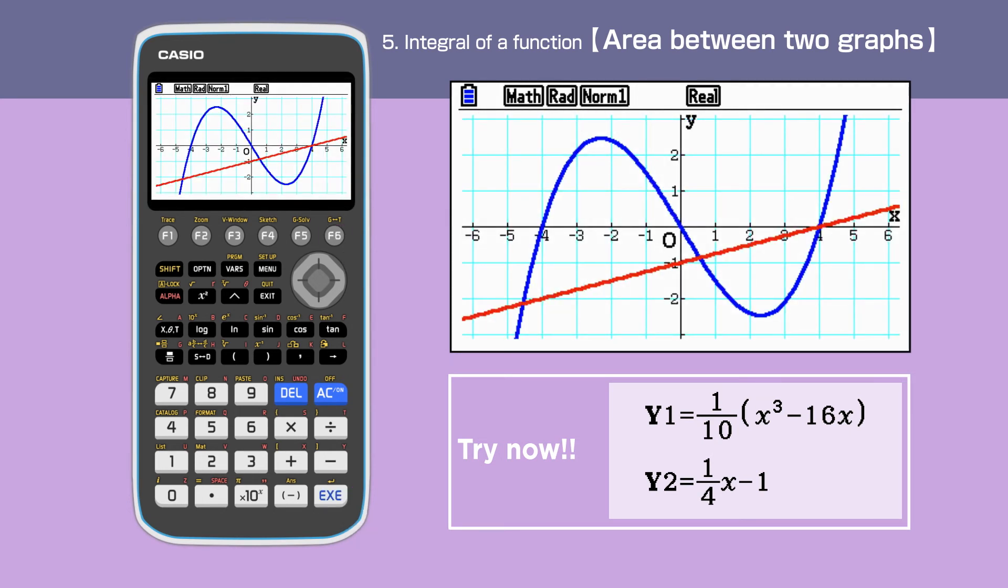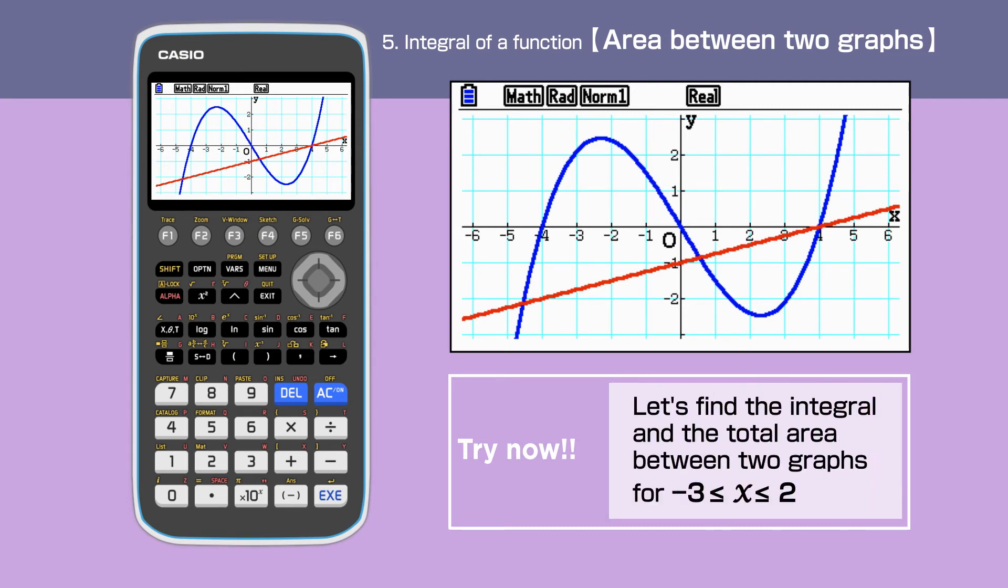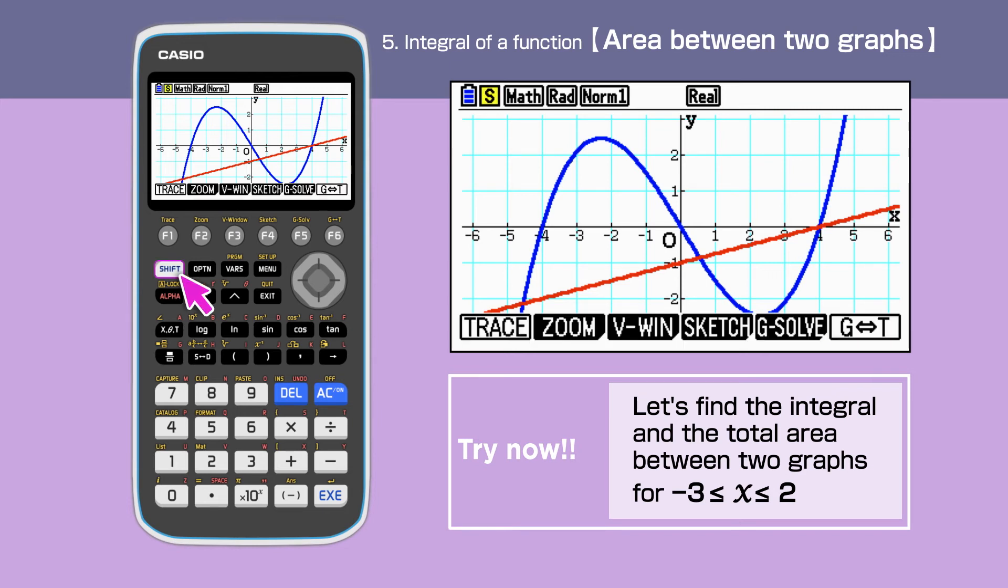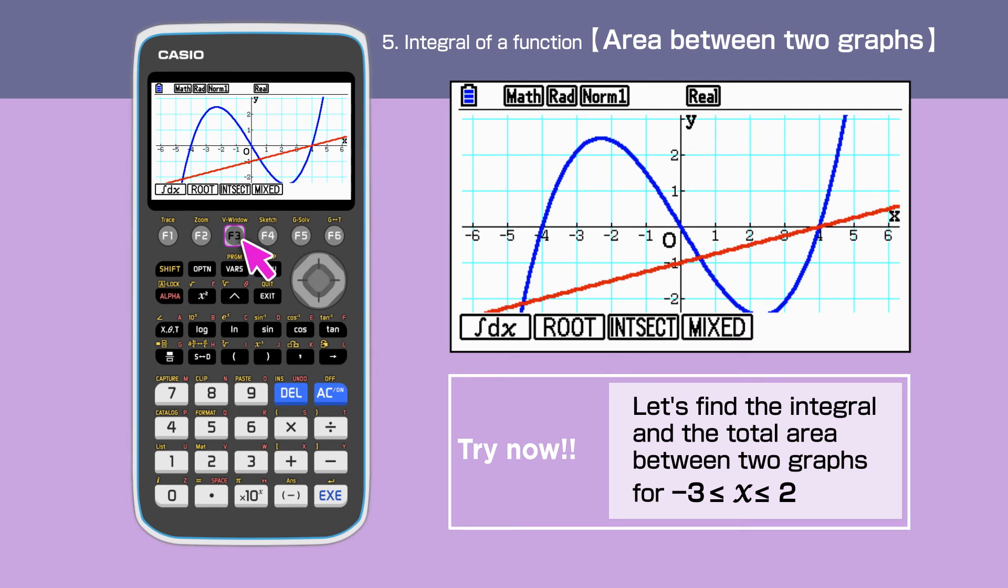We have a cubic and a straight line graph. This time, we are to find the area enclosed by these two functions for x bigger than minus 3 and less than 2. Press Shift F5 to select G-SOLV, then F6, F3 to choose the integration command.